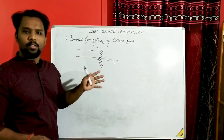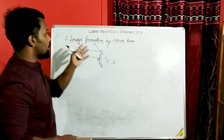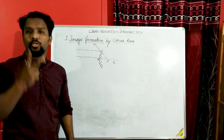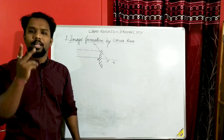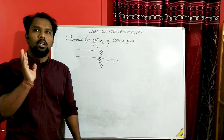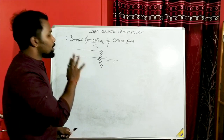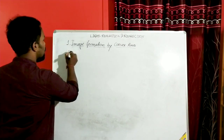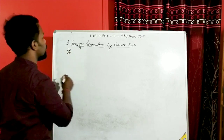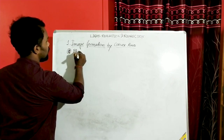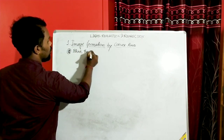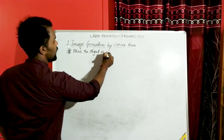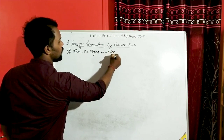Now we will move towards image formation by the convex mirror. In case of image formation by the convex mirror, we are going to have only two conditions — two positions of the object. In case of the concave mirror we have almost six positions, but here we only discuss two. Our first case is when the object is at infinity.